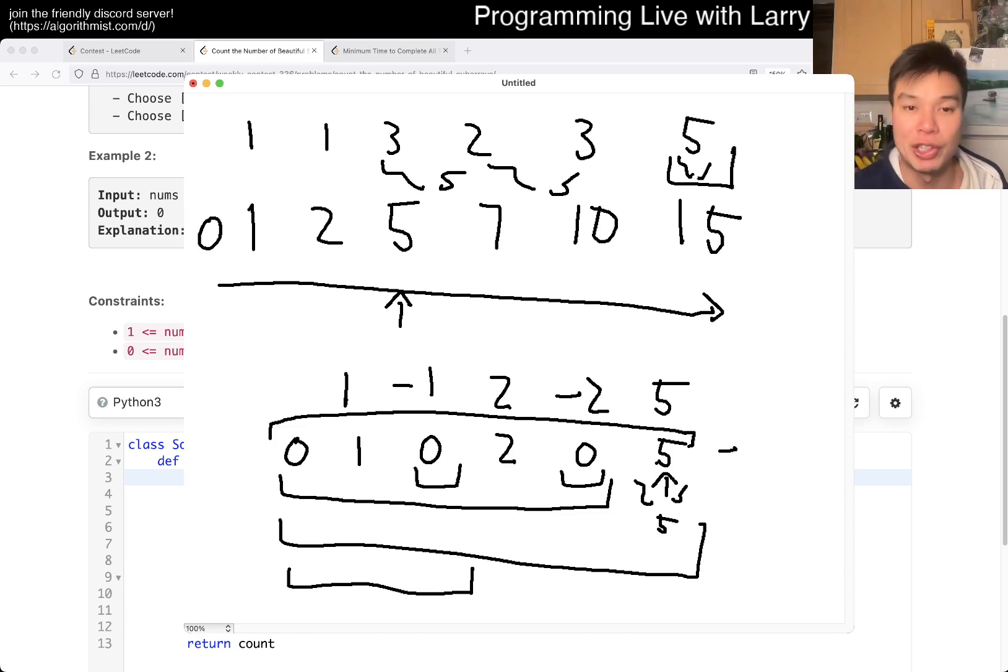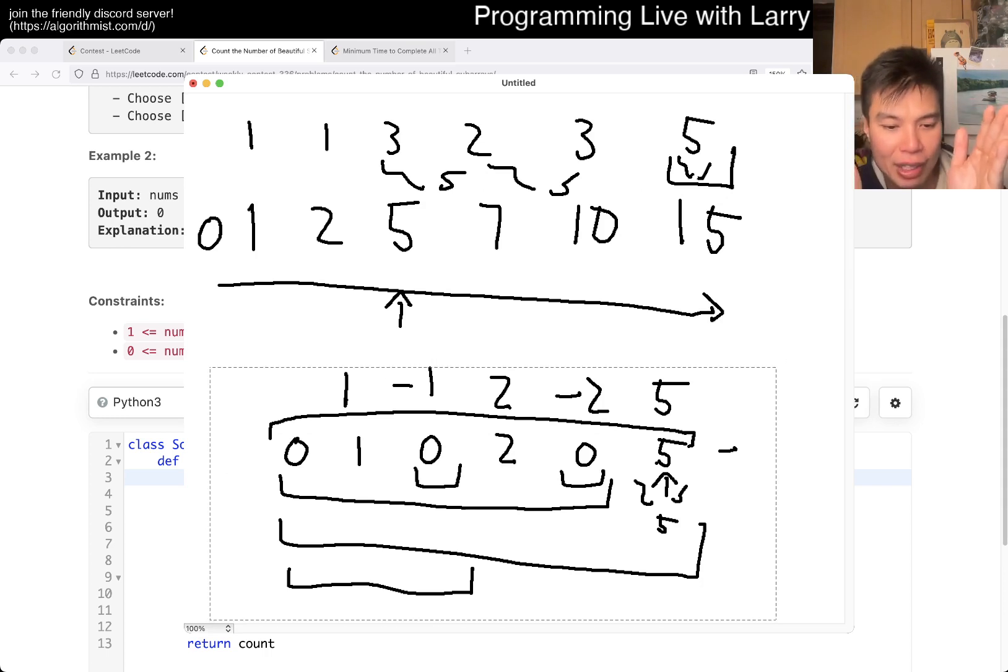In terms of frequency, you're just going: my current sum is 5. How many times have I seen 0? Because that's the starting point of an array where from 0 to 5, the sum is going to be 5.